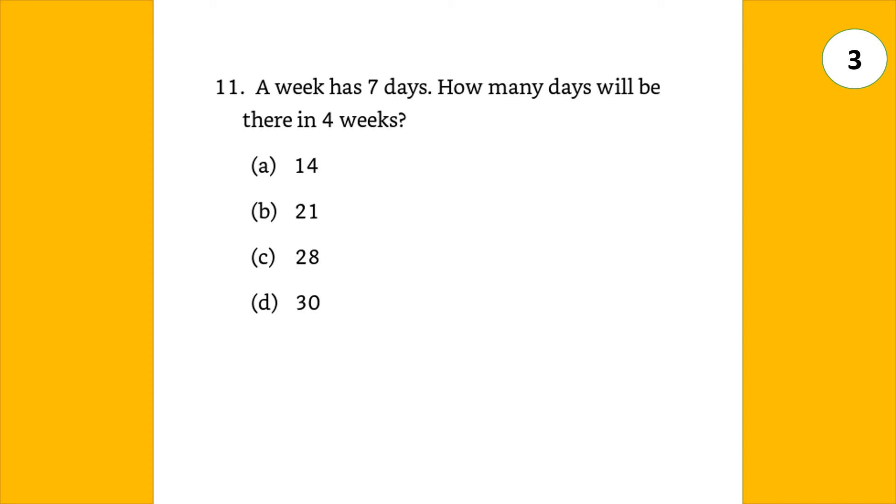A week has 7 days. How many days will be there in 4 weeks? So, answer 7 multiplied by 4 is 28.